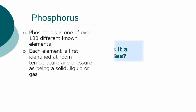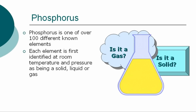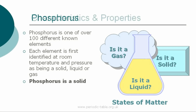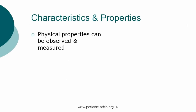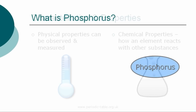Phosphorus is one of over 100 different chemical elements known to modern chemistry. Each element is first identified at room temperature and pressure as being a solid, liquid, or gas, referred to as states of matter. Phosphorus is a solid at normal room temperature and pressure. Each element has physical properties that can be observed and measured, such as color, density, and odor. The chemical properties are the characteristics that determine how a substance will react with other substances such as water or oxygen.